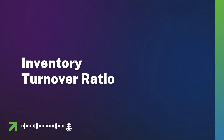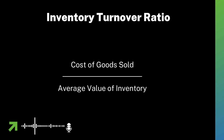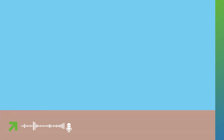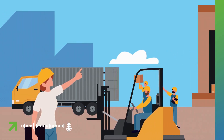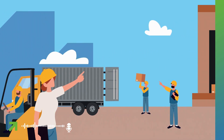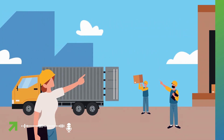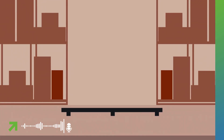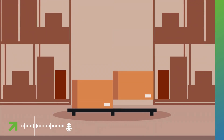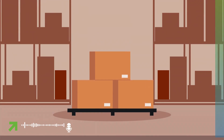Inventory Turnover Ratio helps us understand how many times a company has turned over its inventory relative to its cost of goods sold in a given period. Usually, an efficient company will have a higher inventory turnover ratio compared with an inefficient one.